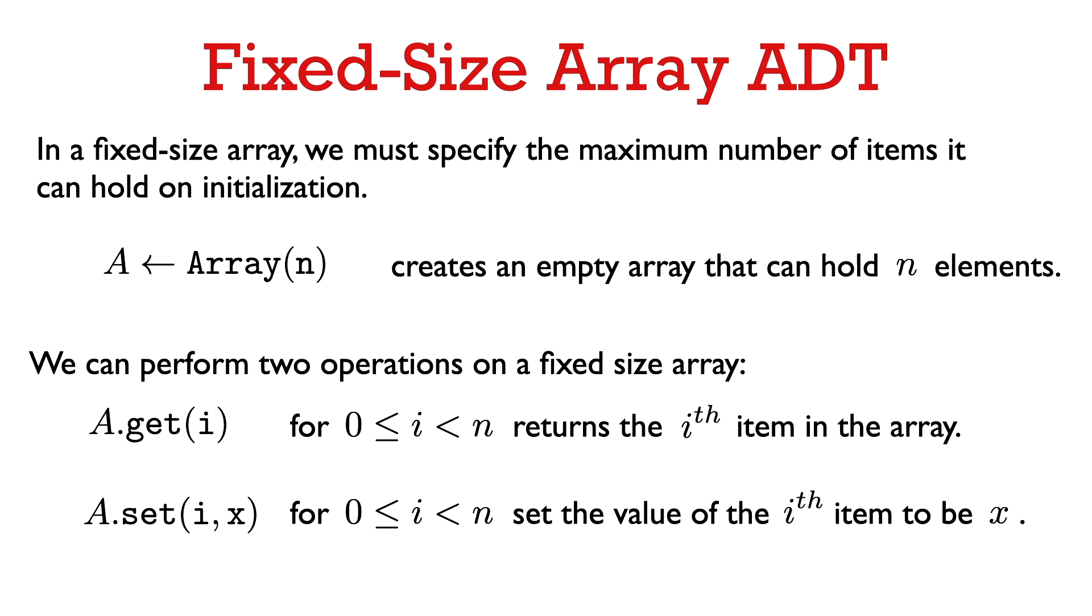We can access elements of a fixed-size array by their index or position in the array. So we can get the value of the ith item in the array by calling a function get with the argument i.